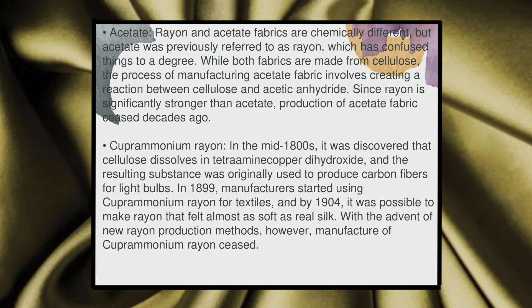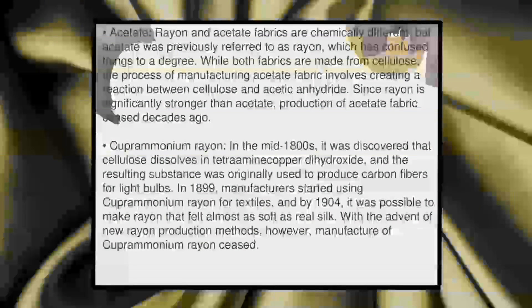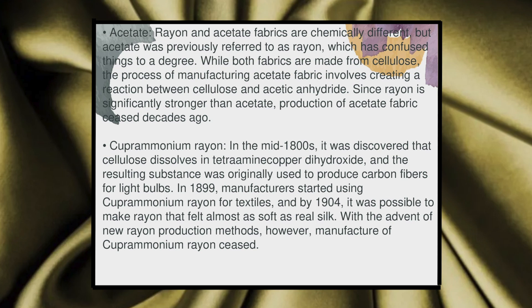Cupramonium rayon is a rayon fibre made from cellulose dissolved in a cupramonium solution. It is produced by making cellulose a soluble compound by combining it with copper and ammonia with caustic soda. The solution is passed through a spinneret and the cellulose is regenerated in hardening baths that remove copper and ammonia and neutralize the caustic soda. Cupramonium rayon is usually made in fine filaments used in lightweight summer dresses and blouses, and sometimes in combination with cotton to make textured fabrics. However, with the advent of new rayon production methods, manufacturing cupramonium rayon has ceased.